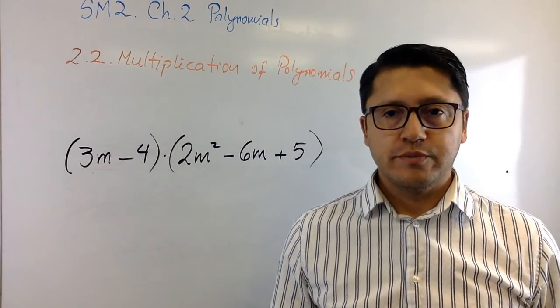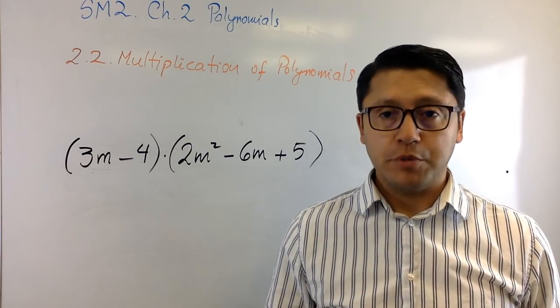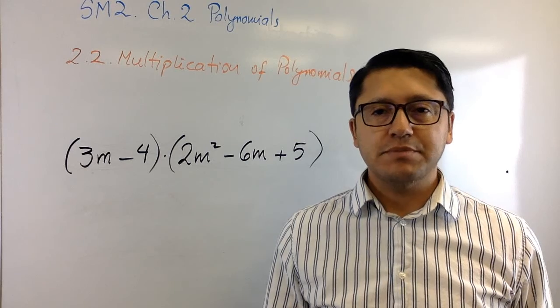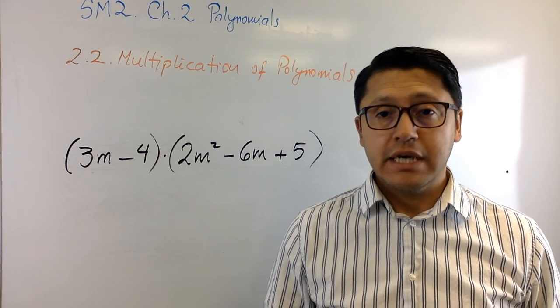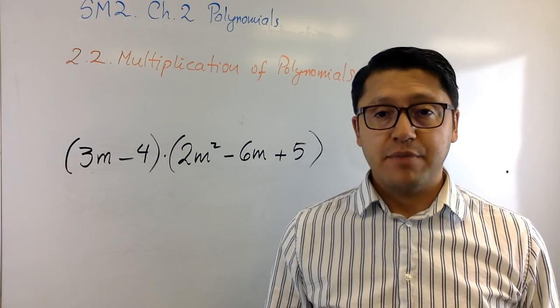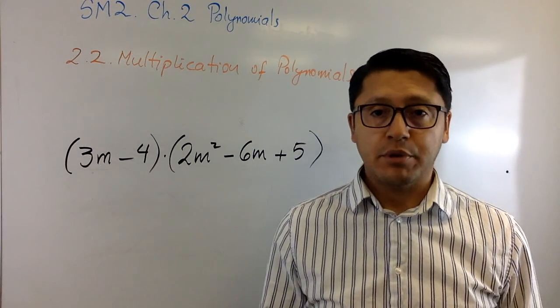Okay, let's continue with unit 2, 2.2. Now we're going to talk about multiplication of polynomials. Here the key aspect or concept that you need to take into account is one of the properties of mathematics. In this case we're going to talk about the distributive property.